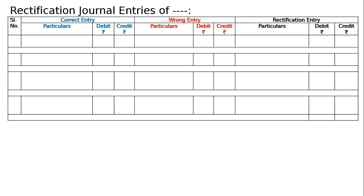Rs. 5400 received from Mr. A was posted to the debit of his account. The correct entry should be cash account debited to Mr. A, Rs. 5400 both in the debit and credit. But it was by mistake debited to his account — cash account debited, Mr. A debited, 5400 and 5400.